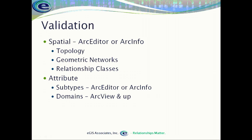For attribute validation, most of this is available at all levels. We have subtypes and domains. Subtypes allow us to group data into individual classes within a single feature class. Domains are those lists or groups of acceptable values.